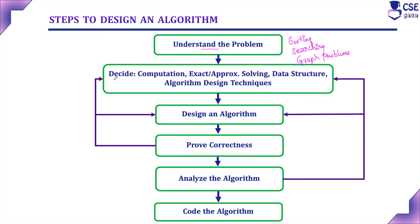The next step is to decide on computational devices, exact versus approximate algorithm, data structure, and algorithmic design technique. First, we need to decide what type of computational device and other special requirements are needed to solve the problem. We need to analyze its operations and executions — whether it executes sequentially or parallelly. If instructions execute sequentially, it comes under a sequential algorithm; if they execute parallelly, it comes under a parallel algorithm. Based on the algorithm type, we need to decide the computational device.